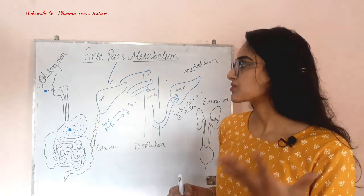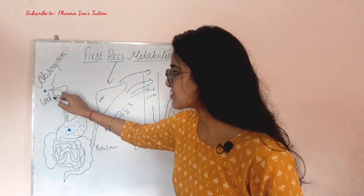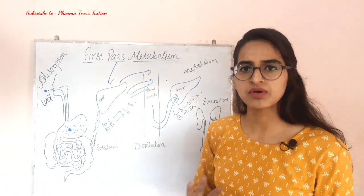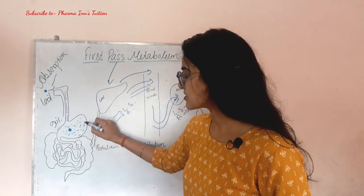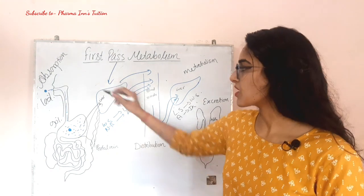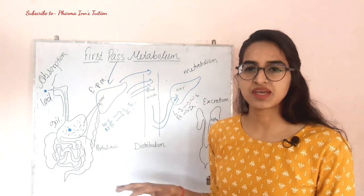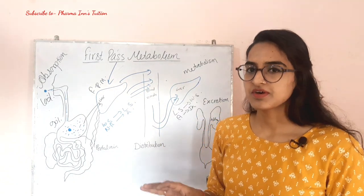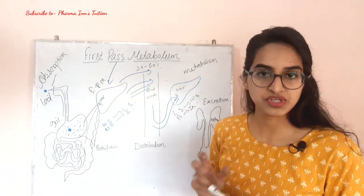When we give a drug orally, what happens? If we give 100% of a drug orally, some percentage is lost during absorption. Suppose 90% is absorbed from the intestine into the liver. But due to first-pass metabolism, many chemical reactions occur and some drug is wasted. After first-pass metabolism, only about 50–60% of the drug reaches our systemic circulation — that means into the blood.